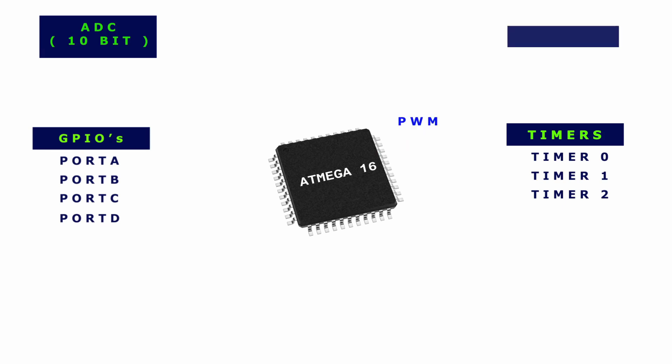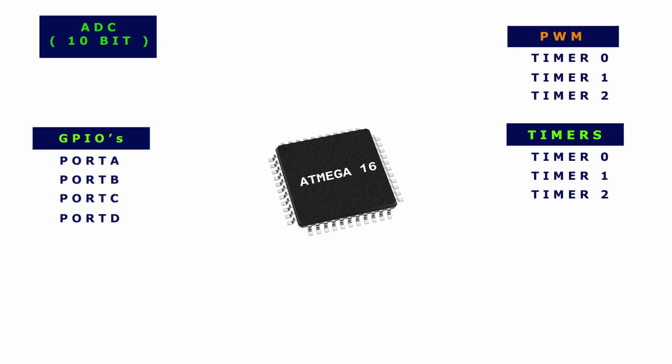As the three timers in our microcontroller each have at least one output compare channel, you can use those channels for generating PWM waves of the required frequency and duty cycle.